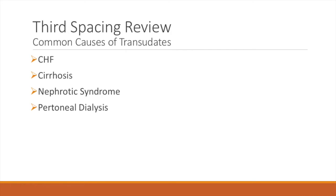I'd like to recommend that you learn the basic idea of what causes transudates in general, and then you can apply it to anywhere in the body, whether it's pleural effusions or ascites. Transudates will happen in response to hydrostatic pressure or osmotic forces. In CHF, blood's going to pool, and then there's a hydrostatic force, so plasma will seep through the vessels and escape through the vasculature.